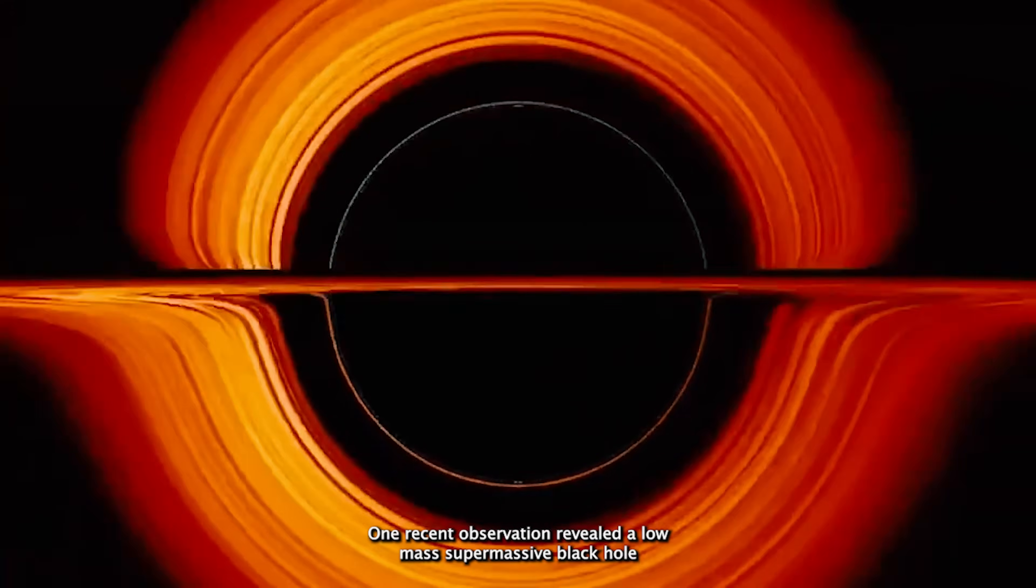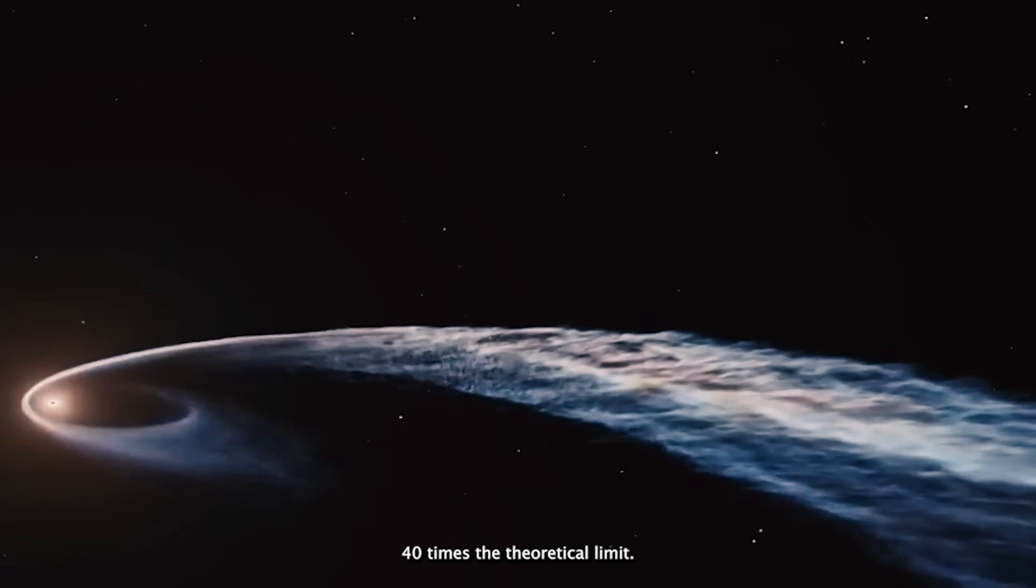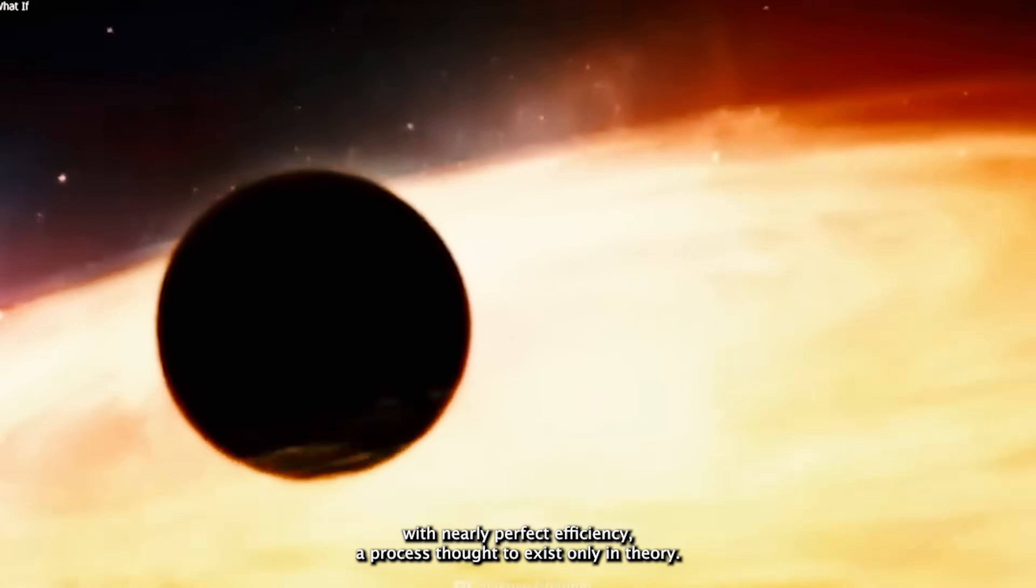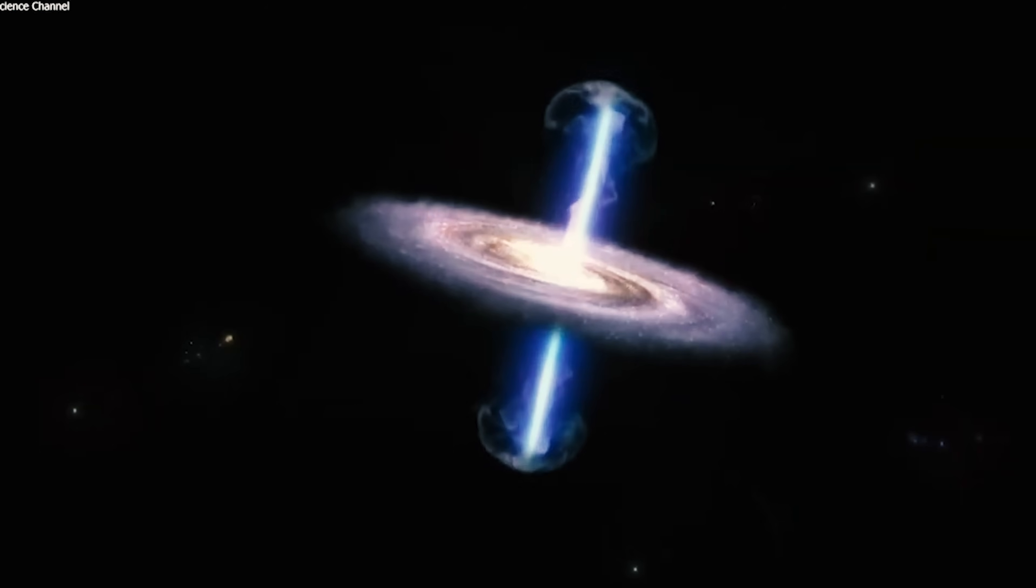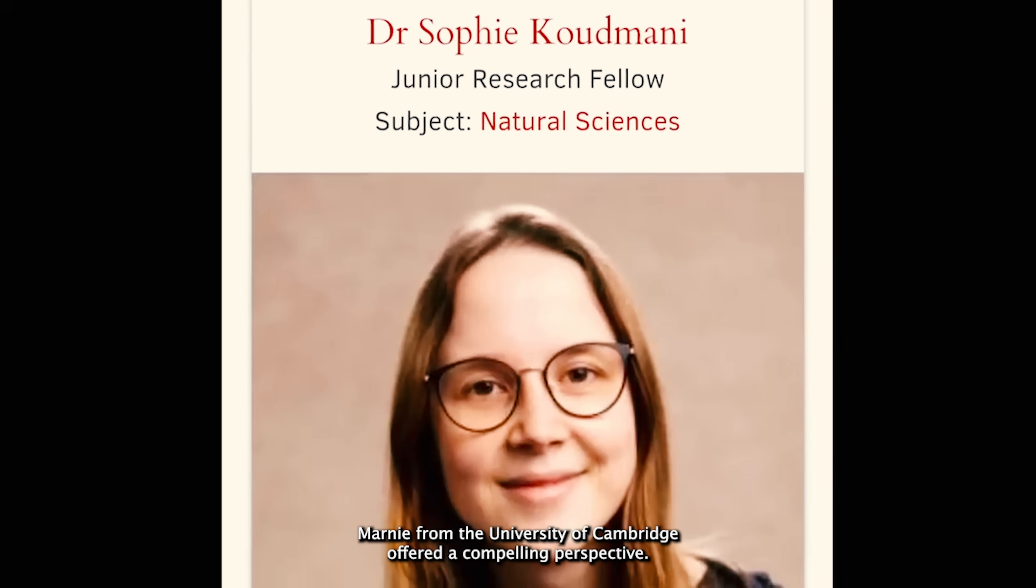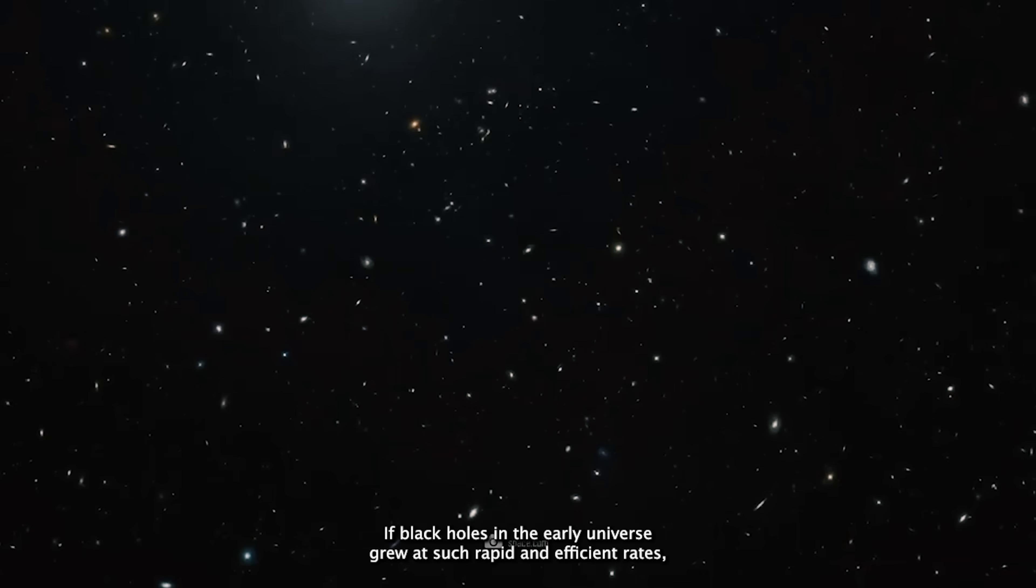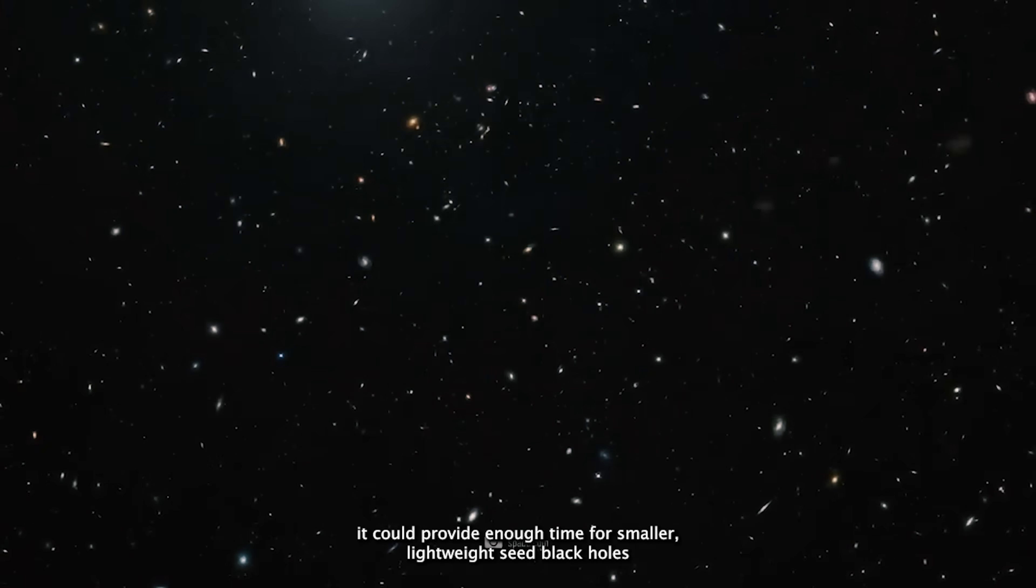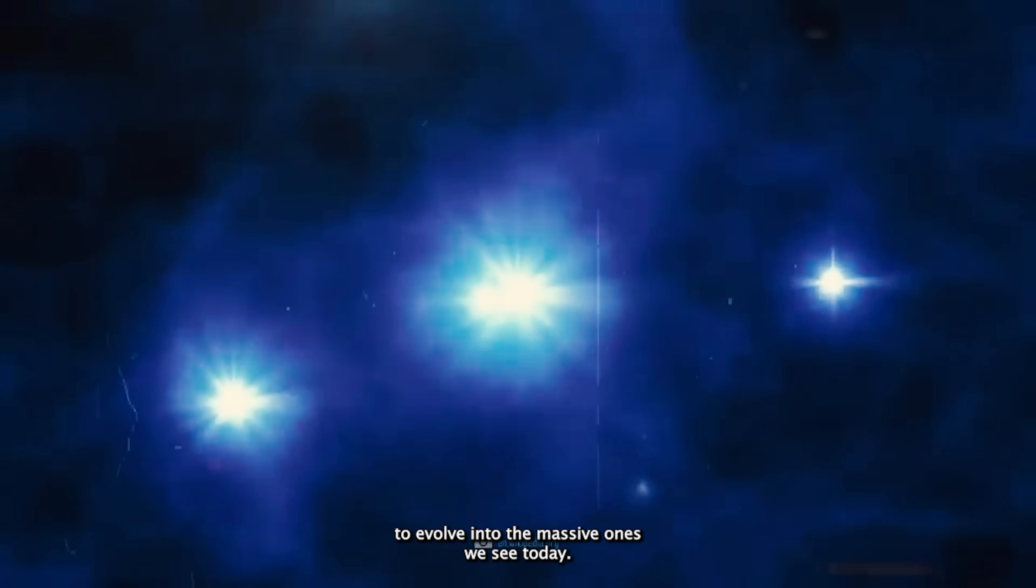One recent observation revealed a low-mass supermassive black hole that is devouring matter at an astonishing pace, 40 times the theoretical limit. Additionally, these early black holes appear to be growing with nearly perfect efficiency, a process thought to exist only in theory. Astrophysicist Sophie Kudmani from the University of Cambridge offered a compelling perspective. If black holes in the early universe grew at such rapid and efficient rates, it could provide enough time for smaller, lightweight seed black holes to evolve into the massive ones we see today.